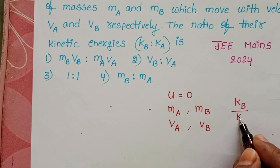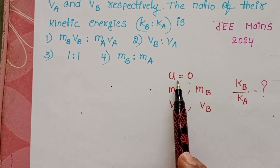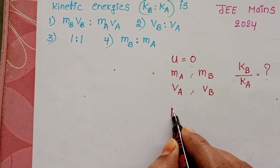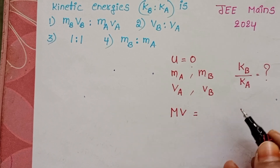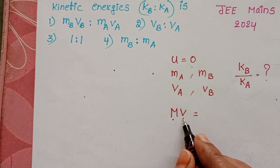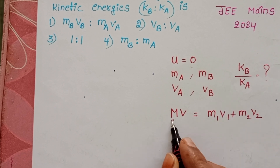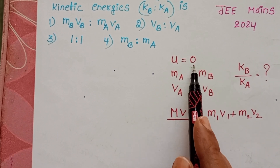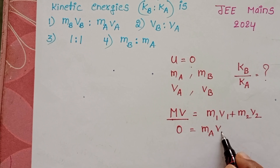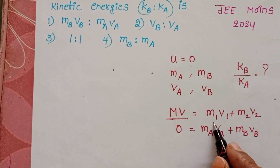We need to find the ratio of kinetic energy of the second particle to the kinetic energy of the first particle. Since the particle is initially at rest, the initial momentum is 0. By the law of conservation of momentum, total momentum before explosion equals total momentum after explosion: MV = M1V1 + M2V2. Here, 0 = Ma·Va + Mb·Vb, in vector representation.